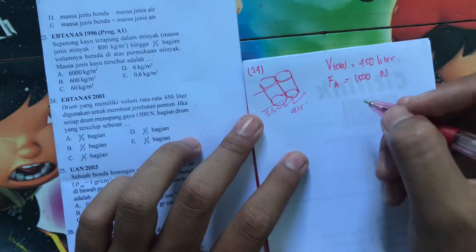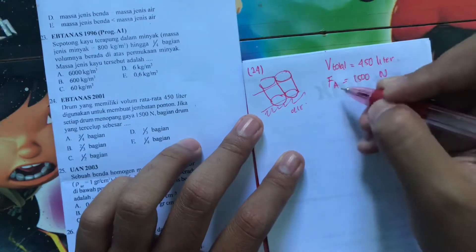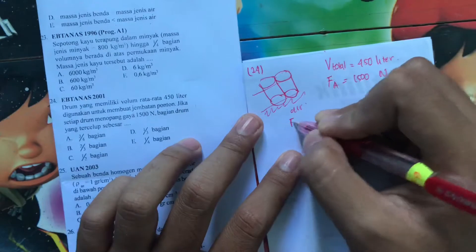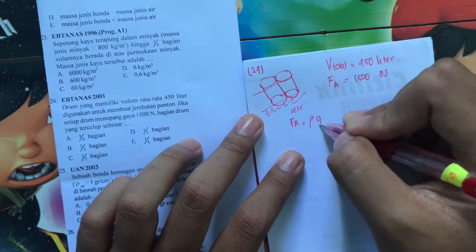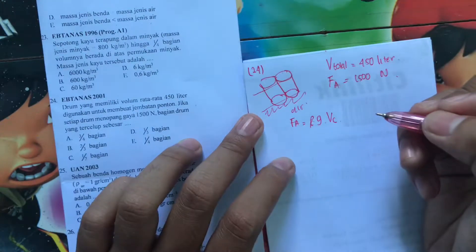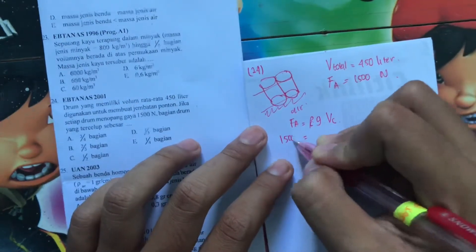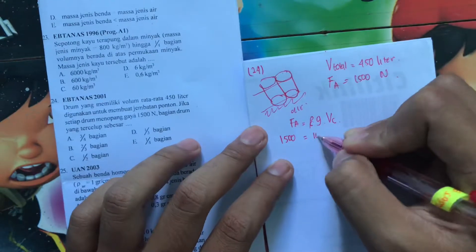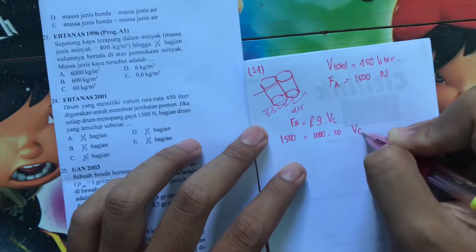Bagian drum yang tercelup adalah. Menopang gaya berarti FA-nya. Yuk kita masukin. FA itu sama dengan rho cairan kali G kali volume tercelup. Berarti FA-nya berapa? 1500. Rho cairannya kan air, berarti air itu adalah seribu. G-nya sepuluh. Ini adalah volume tercelup. Kita nggak tahu yang tercelup berapa.